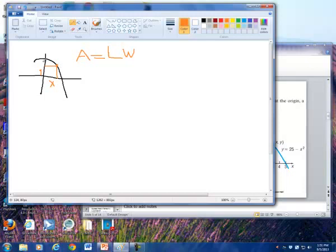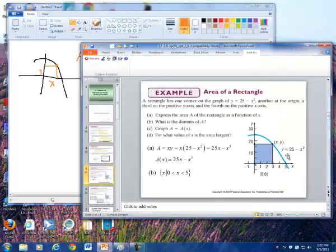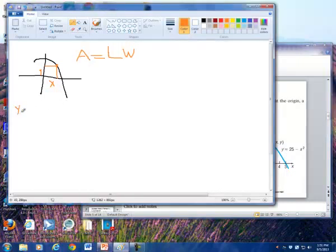Well, the width is dependent on what this parabola is here. And that equation says 25 minus x. Y equals 25 minus x squared. So we have here x is our, we'll call that our length. And our width, that's y.